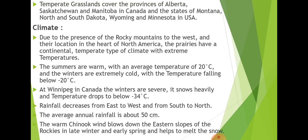Summers are warm and humid, around 30 degrees Celsius, while winters are extremely cold, bringing temperatures below the freezing point — about minus 20 degrees Celsius on average. This is the continental type of climate, characterized by extreme temperature variation, found over the prairie region.